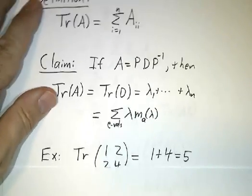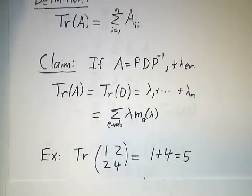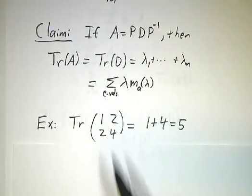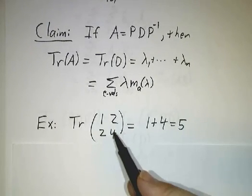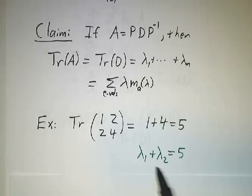For example, if we have the matrix (1 2; 2 4), the trace is easy. It's just 1 plus 4, that's 5. So whatever the eigenvalues are, they have to add up to 5.